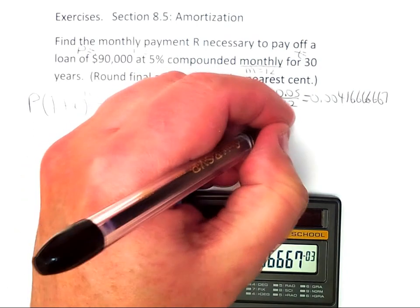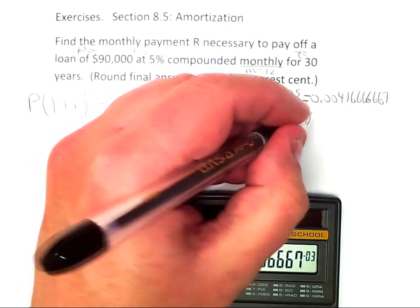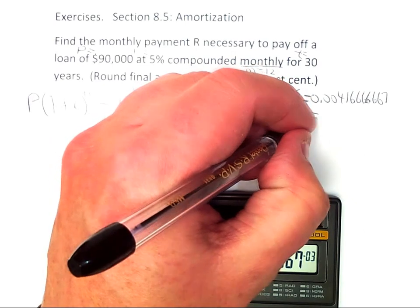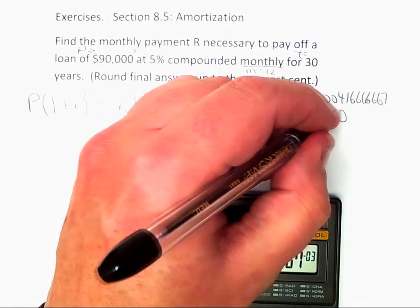M times T is very easy. It's 12 times 30, which of course is 360. Easy enough.